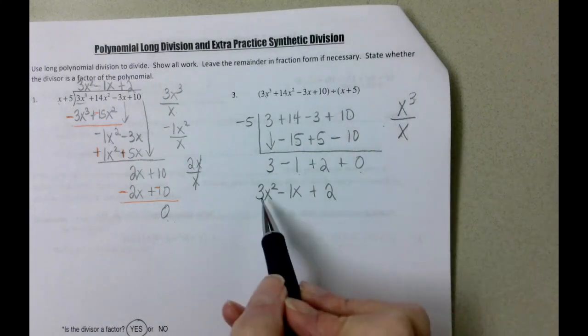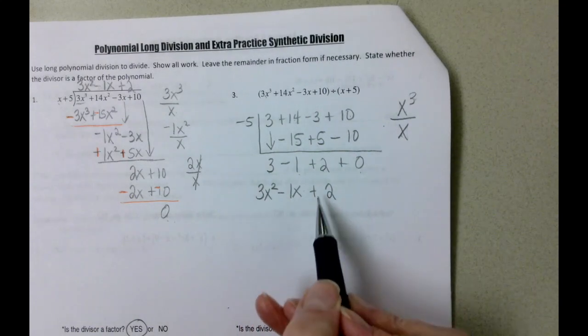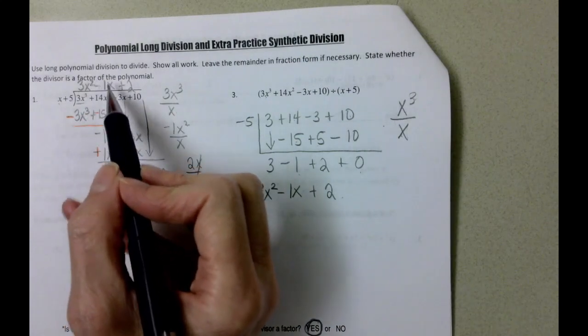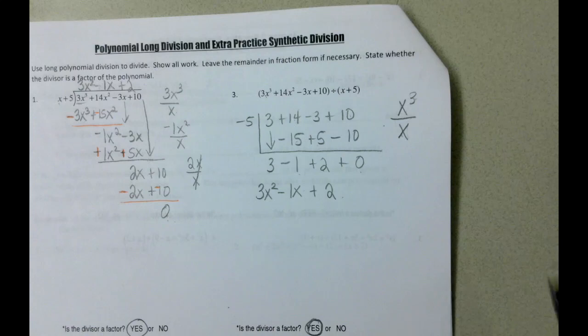Notice, 3x squared minus 1x plus 2 here. 3x squared minus 1x plus 2 on the long division. We will get the same answer, the same quotient, which is an answer to a division problem. Whether we do long polynomial division, which was my first method, or the shortcut version, also known as synthetic division, on example number 3.